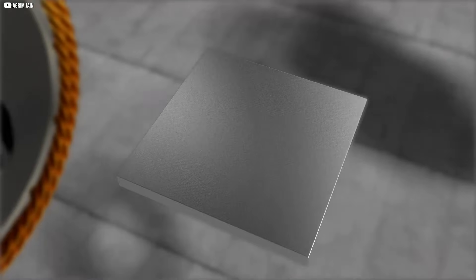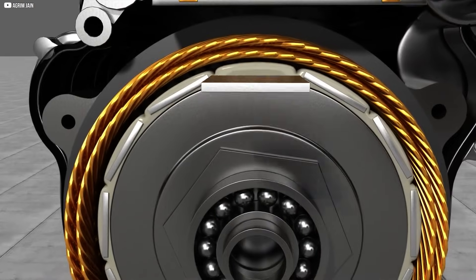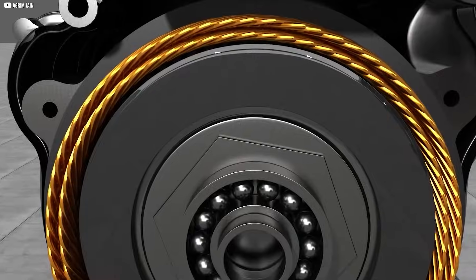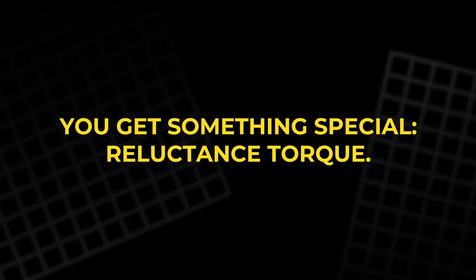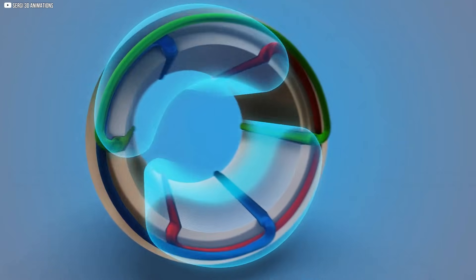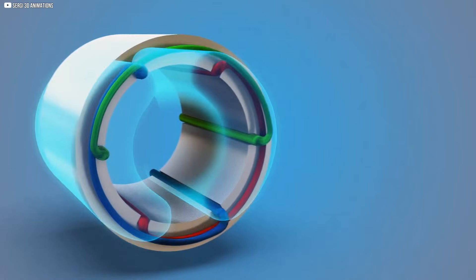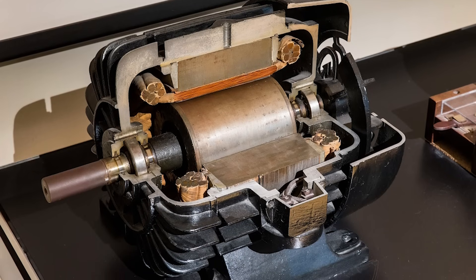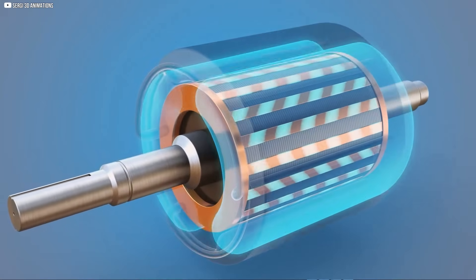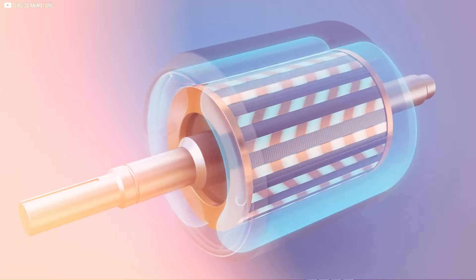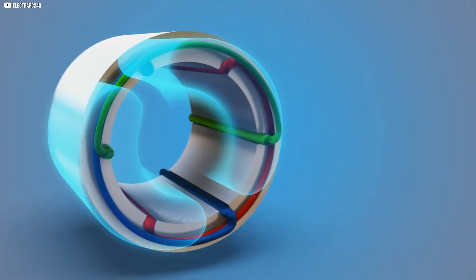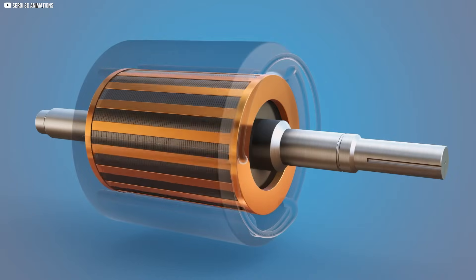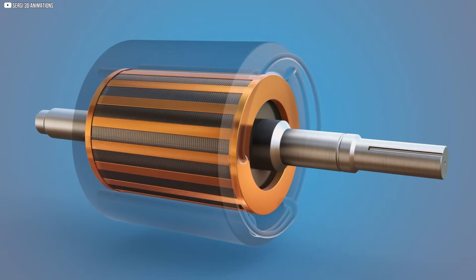But what happens if you shape your motor's rotor in a way that it constantly tries to move toward this low-reluctance state as the magnetic field rotates? You get something special – reluctance torque. Instead of depending on magnets or induced currents to create motion, this design uses the physical geometry of the rotor. As the rotating magnetic field from the stator sweeps around, the rotor naturally tries to align itself with the moving field to minimize reluctance. It's like the rotor is always chasing the easiest magnetic path.